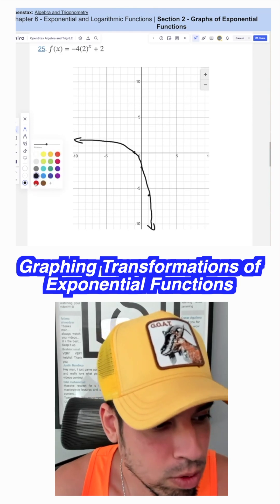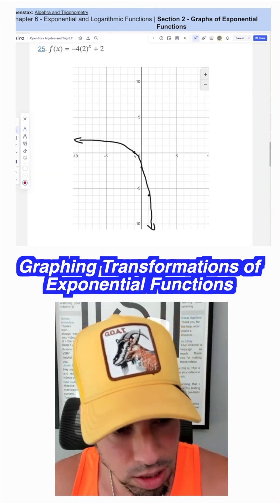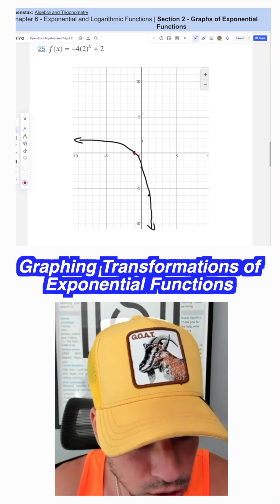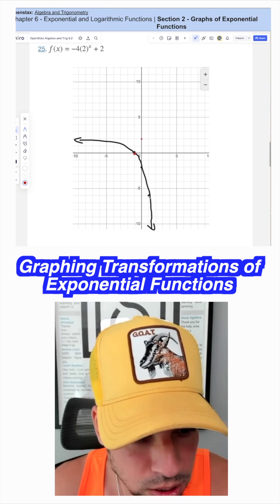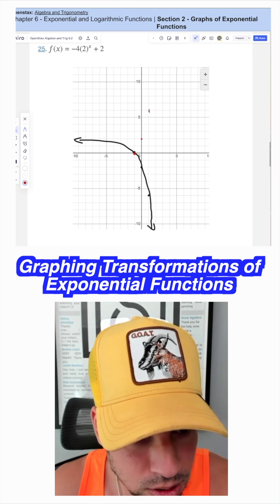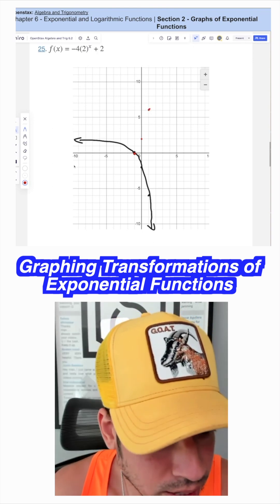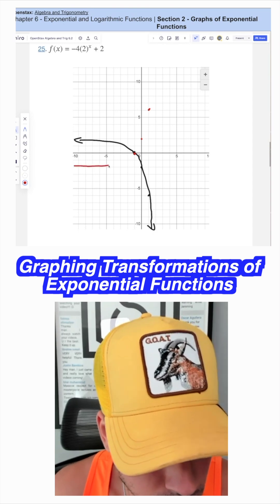Now, if we reflect this across the x-axis, anything on the x-axis stays as is. This one is down here, so it jumps up here. This point is down here, so it jumps up here to 6. And instead of a horizontal asymptote at 2, now it's at negative 2. So we're going to look like this. And there's the reflection.